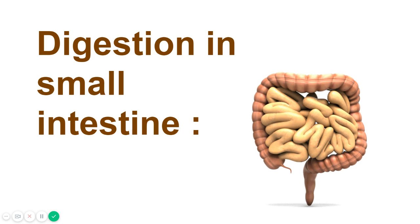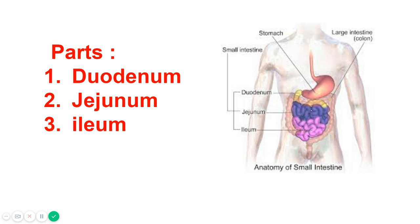This video deals with digestion in the small intestine. The small intestine is the most important part of the digestive system of man. It is the longest part and consists of three parts: duodenum, jejunum, and ileum.